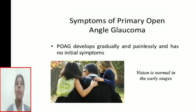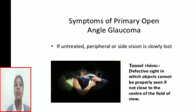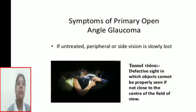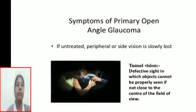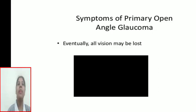Primary open-angle glaucoma develops gradually and painlessly with no initial symptoms. Vision is normal in the earlier stages, but if untreated, peripheral or side vision is slowly lost — a tunnel vision effect, where objects cannot be properly seen if not close to the central field of view. Eventually, all vision may be lost.